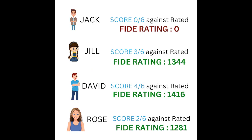So this is how the final rating calculation of all four friends looks. Jack does not get his initial rating. Jill gets an initial rating of 1344. David gets an initial rating of 1416 because he scored more than average — 4 out of 6. Rose scored less than the average — 2 out of 6 — so she gets an initial rating of 1281. I hope you found this video useful and can now calculate a FIDE initial rating without any difficulty. If you liked the video, please hit the subscribe button.